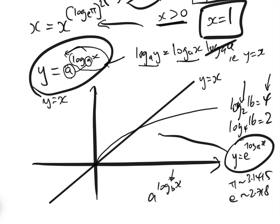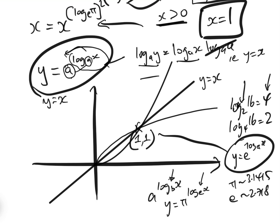It is going to go underneath y equals x, crossing at the point (1, 1). We've already established x equals 1 is a solution. That is the curve of y equals e to the power of log_pi(x). Inversely, for y equals pi to the power of log_e(x), e is smaller than pi, so this value is going to be bigger, and that curve is going to look exponential.